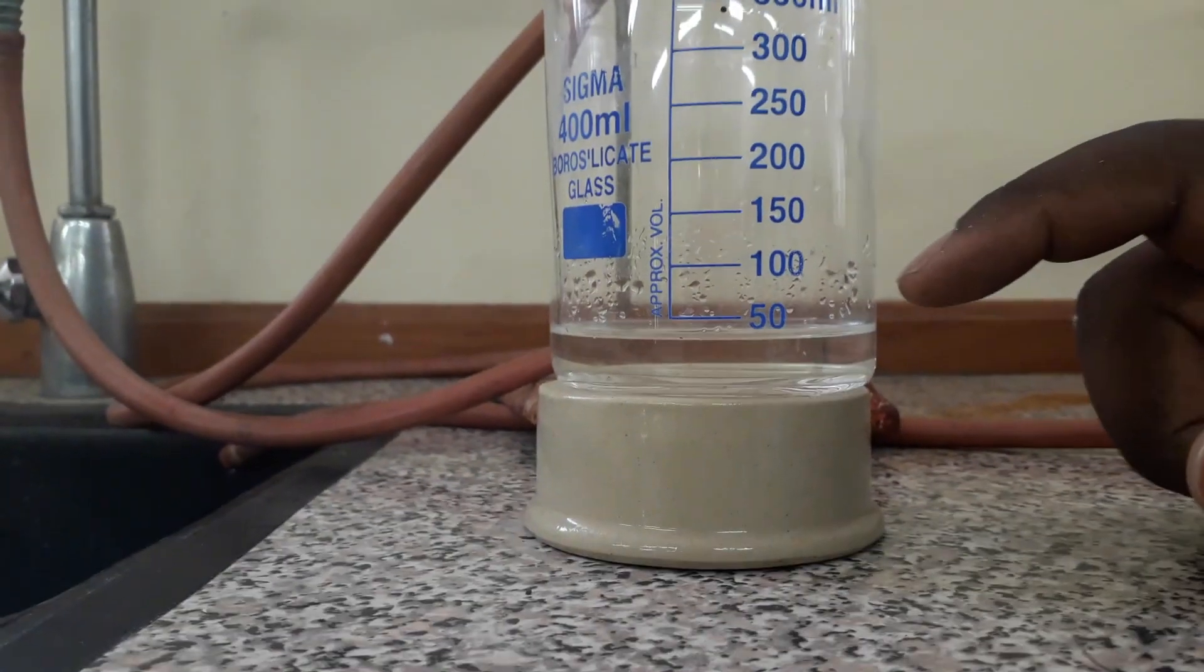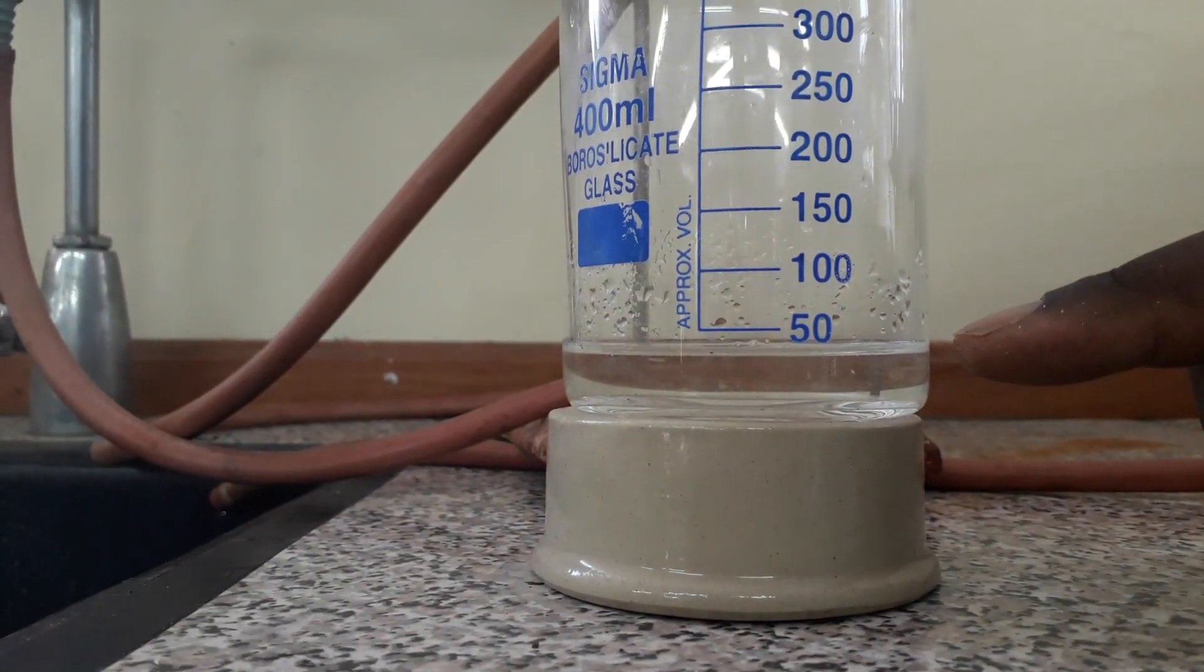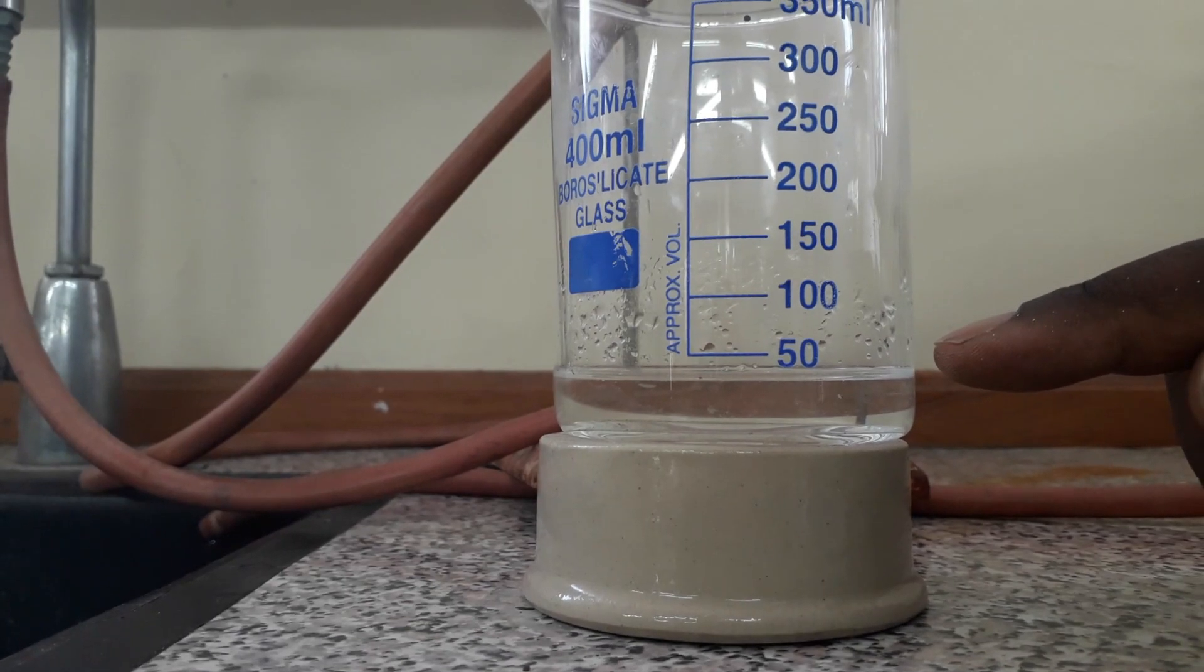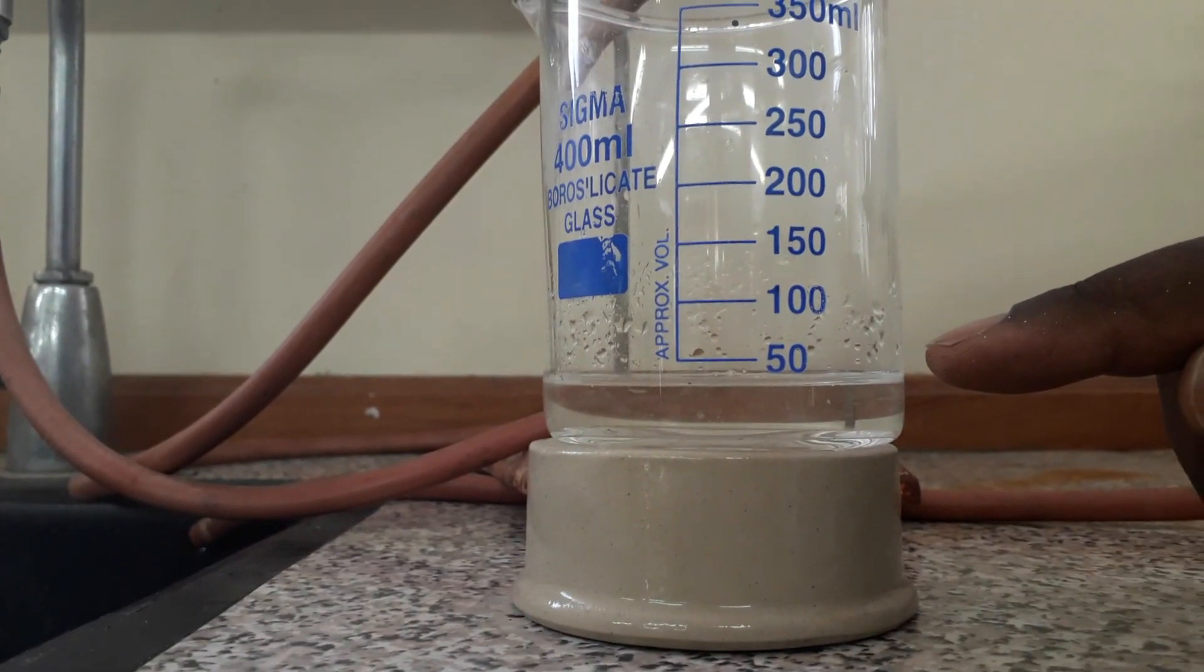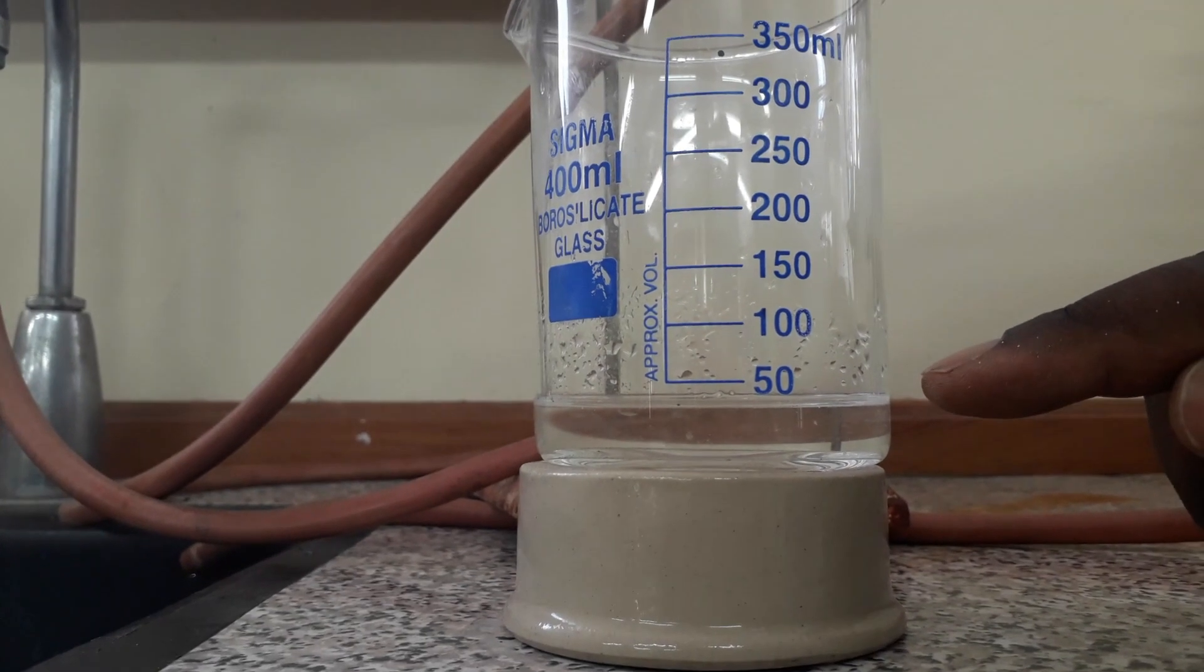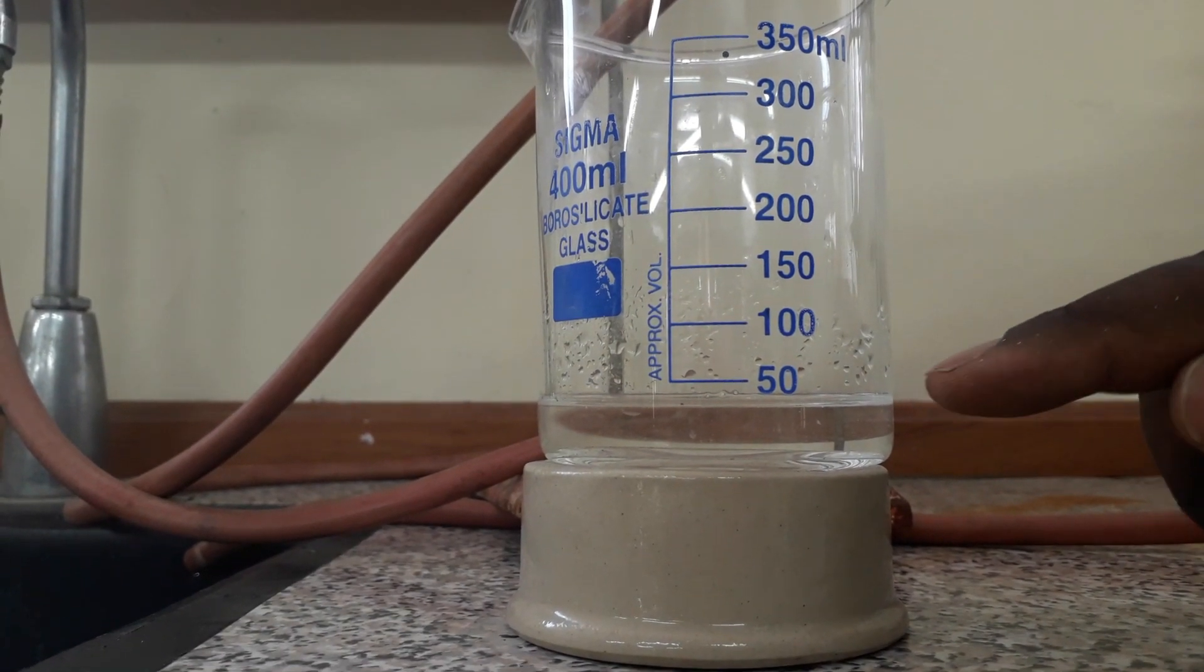So if we're looking closely at our liquid, we will see that we have a large layer at the bottom and then a very thin layer, oily layer at the top. A water layer at the bottom, which is a thicker one and a thin oily layer on top.